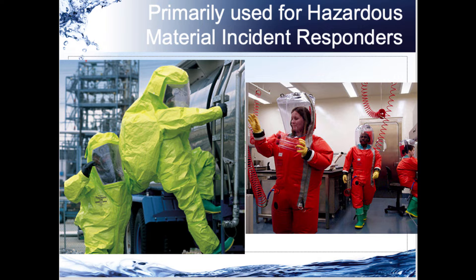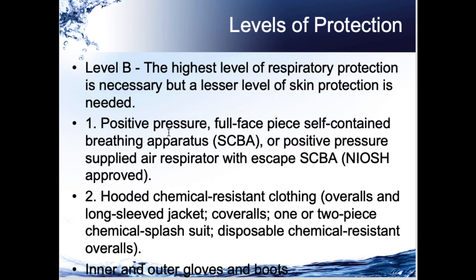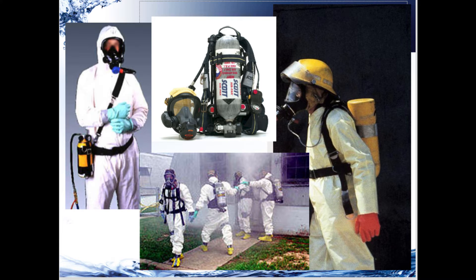Level A and level B are similar in that they have the same level of respiratory protection — both using supplied air. The difference is in the suit. Instead of a fully encapsulating suit with a zipper through which nothing can penetrate, in level B you would be in a hooded chemical suit, overalls, or a two-piece chemical suit. You might even be in one that appears like a level A suit with a hood, but it is in fact level B. The key difference is that you've characterized the work zone and recognized the agent cannot be absorbed through the skin, and the appropriate chemical suit can be used without it melting.